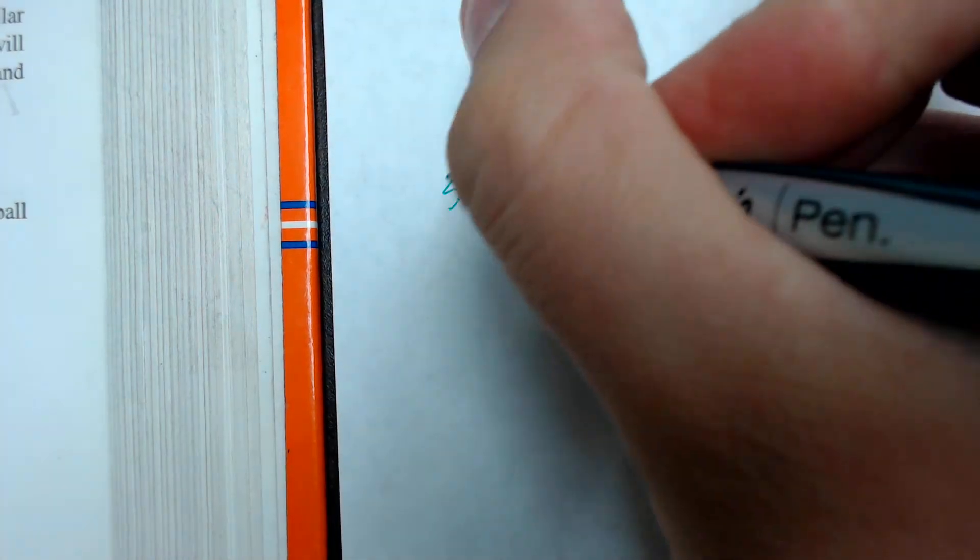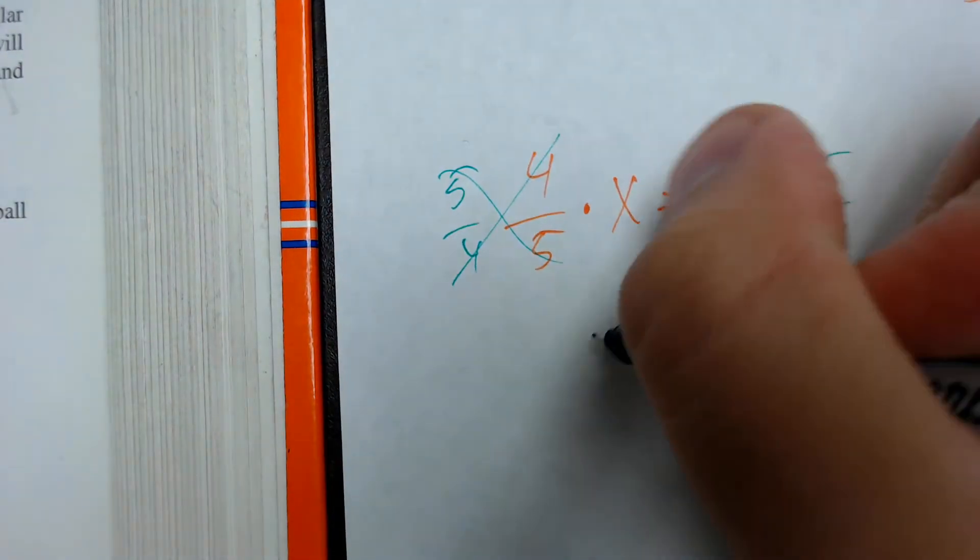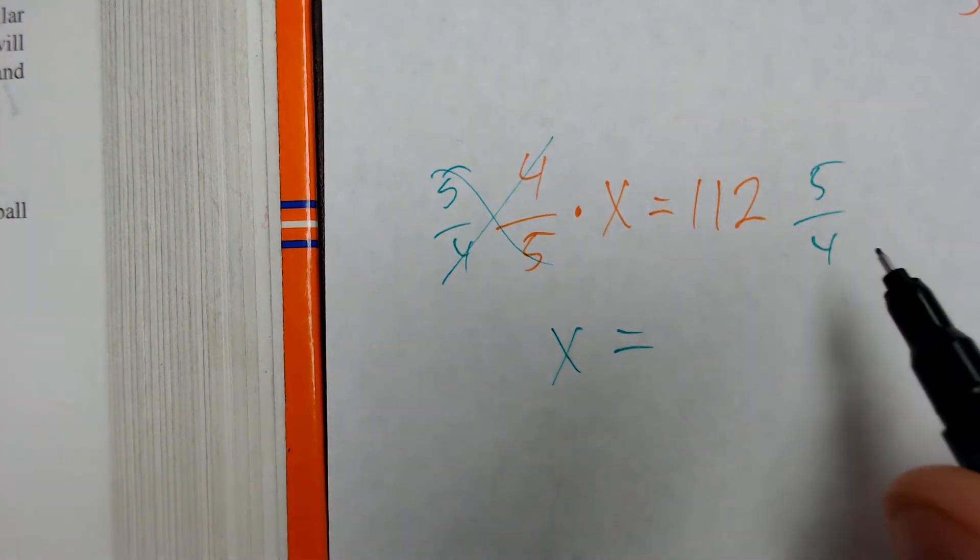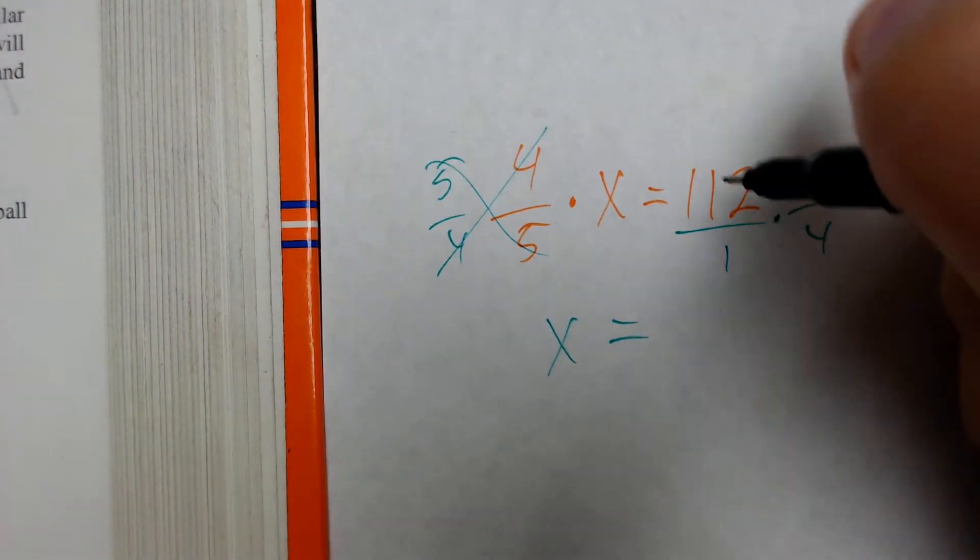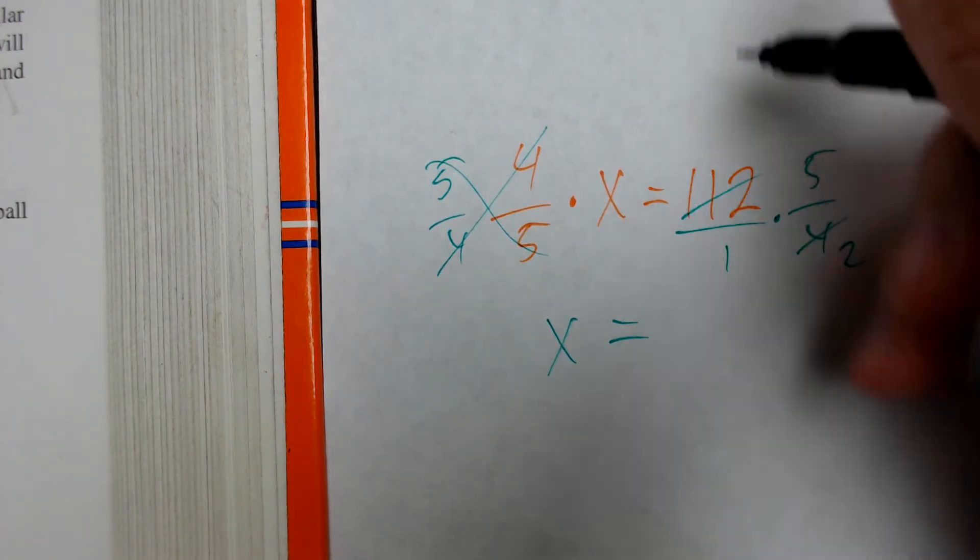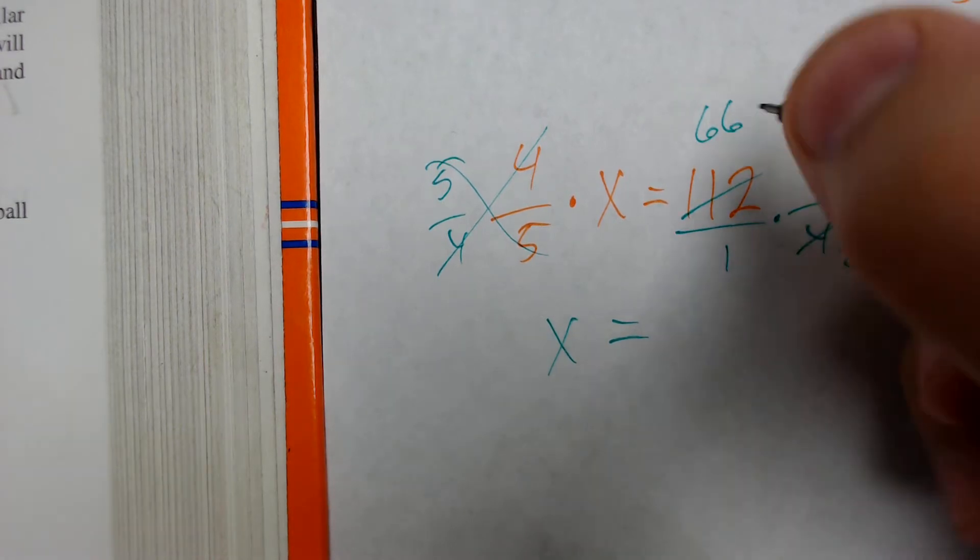To do this, I will multiply by the reciprocal of 5 fourths. That cancels. So, then I get x on this side. x is equal to 112 over 1 times 5 fourths. I can divide each of these by 2. That gives me 56.